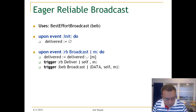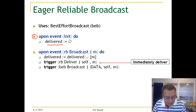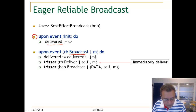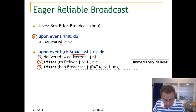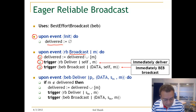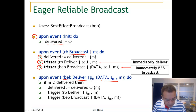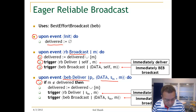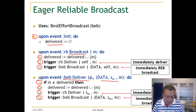Here is the algorithm. Initially, we have the delivery set. When we get a request for broadcasting a message from the higher level, we immediately add the message to the delivery set, trigger a deliver locally, and do a BEP best-effort broadcast of the message. And whenever we BEP deliver a message, we check if it is in the delivery set or not. If it is not, we add it to the delivery set, immediately deliver it, and immediately BEP broadcast the message. It's as simple as that.